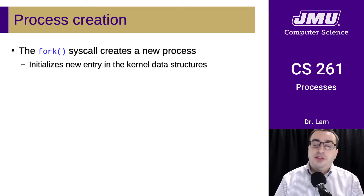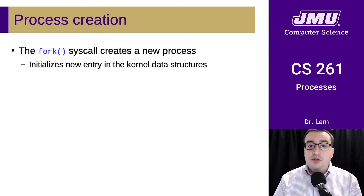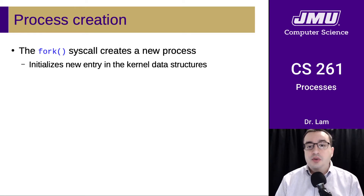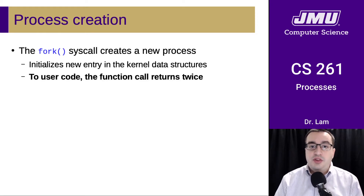To create a new process at the user level, we would call the fork syscall. This creates a new process and initializes a new entry in all of the kernel data structures that are needed in order to maintain processes.